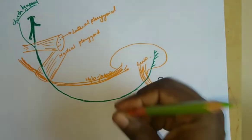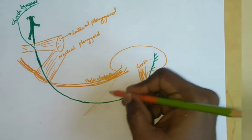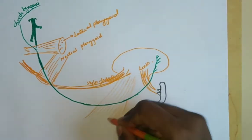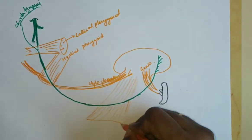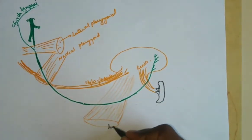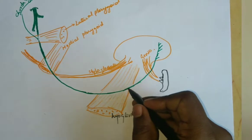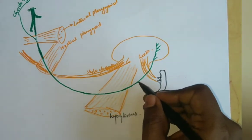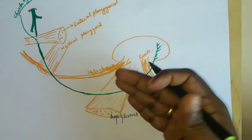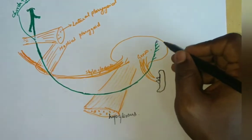It crosses the styloglossus muscle and is then found on the hyoglossus muscle — along the lateral aspect of the hyoglossus. Here it is found between the hyoglossus and the mylohyoid. Then it enters inside the substance of the genioglossus and ends by supplying the anterior two-thirds of the tongue.